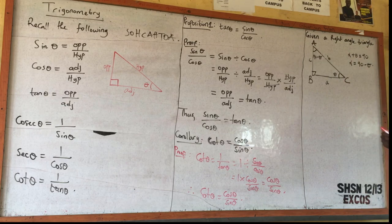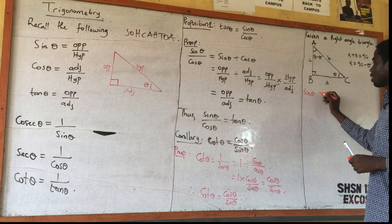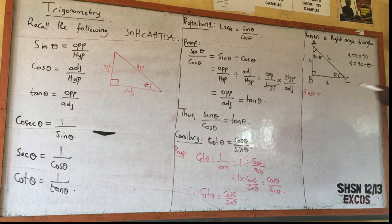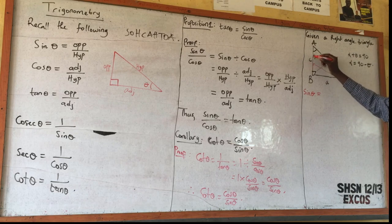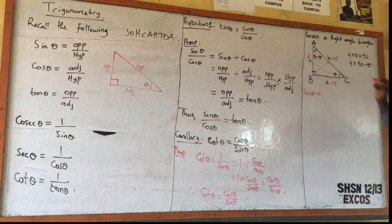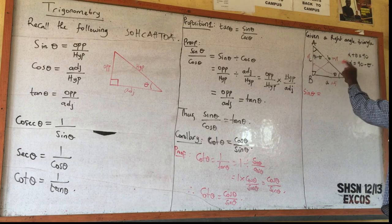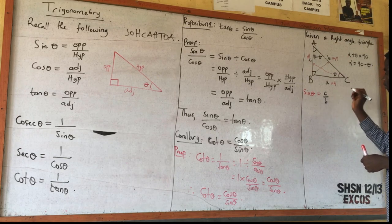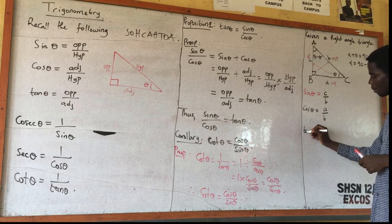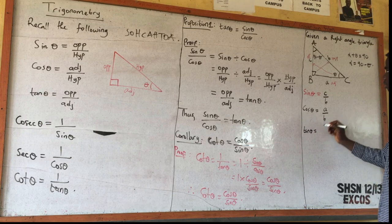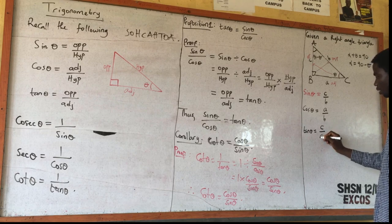Now let us find the trig ratios with respect to theta. Sine theta is opposite over hypotenuse, which is C over B. Cos theta is adjacent over hypotenuse, which is A over B. Tan theta is opposite over adjacent, which is C over A. Now consider sine of (90 minus theta): the hypotenuse is still B, but the opposite and adjacent swap — the opposite becomes A, and the adjacent becomes C.